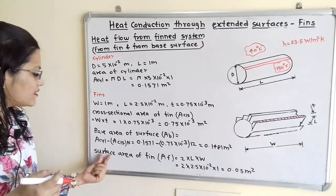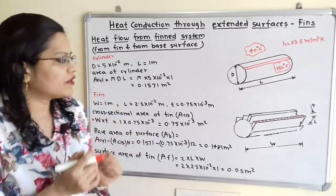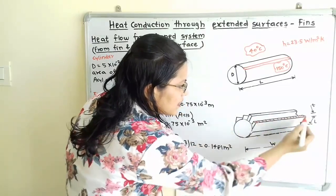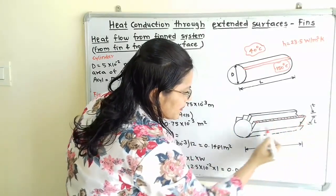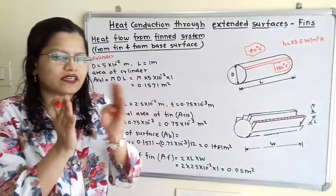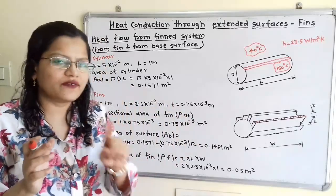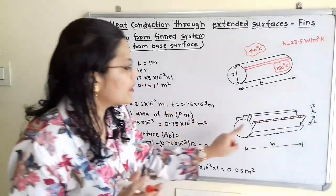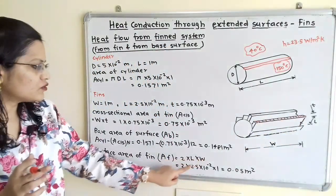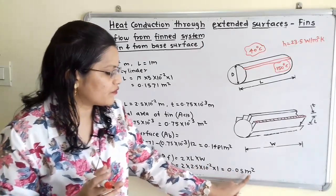Now we calculate the surface area of the fin. Each fin has two surfaces responsible for heat transfer, one on each side. So for one fin, surface area = 2 × width × length = 2 × 1 × 2.5 × 10⁻² = 0.05 m².